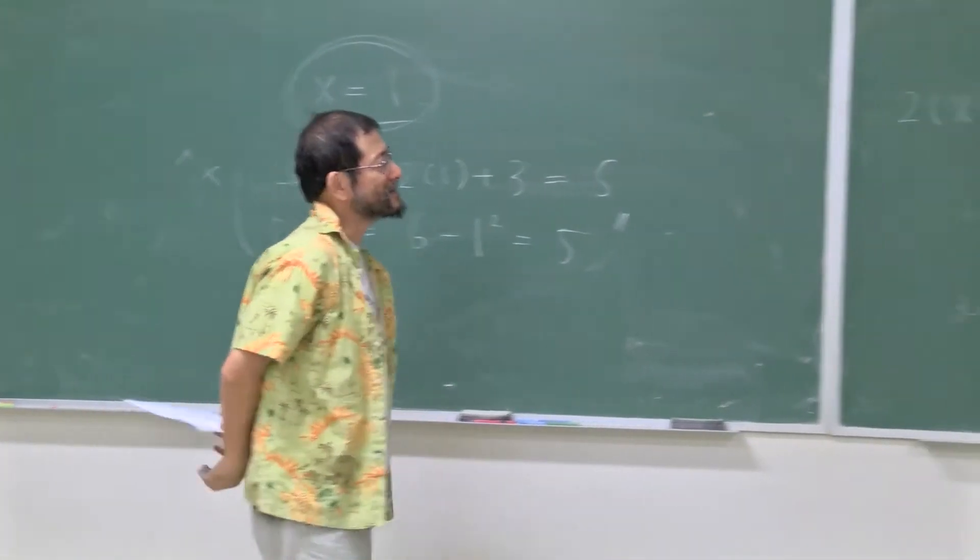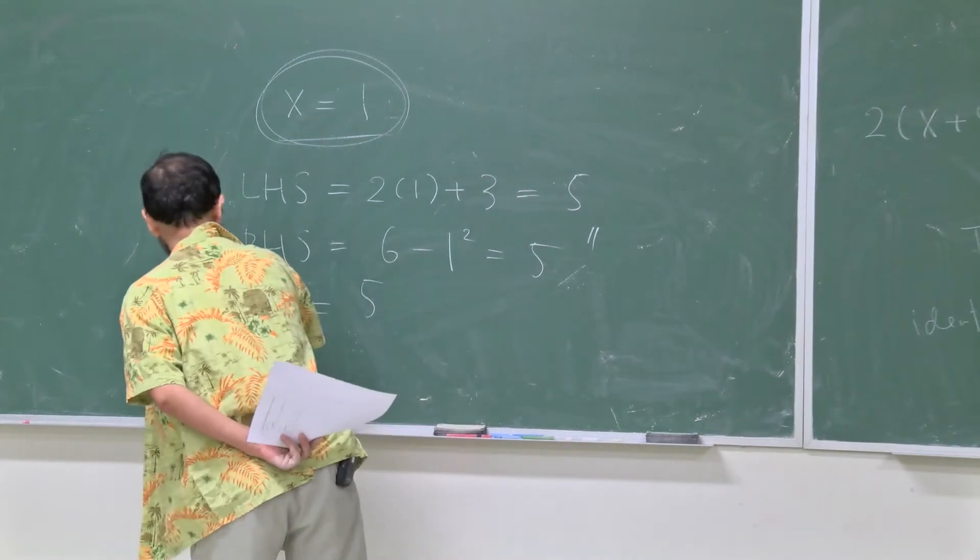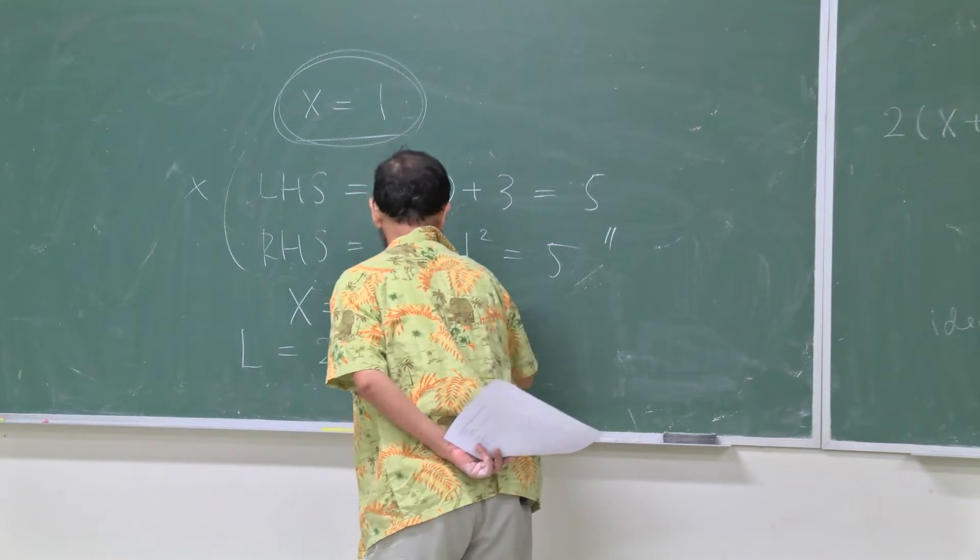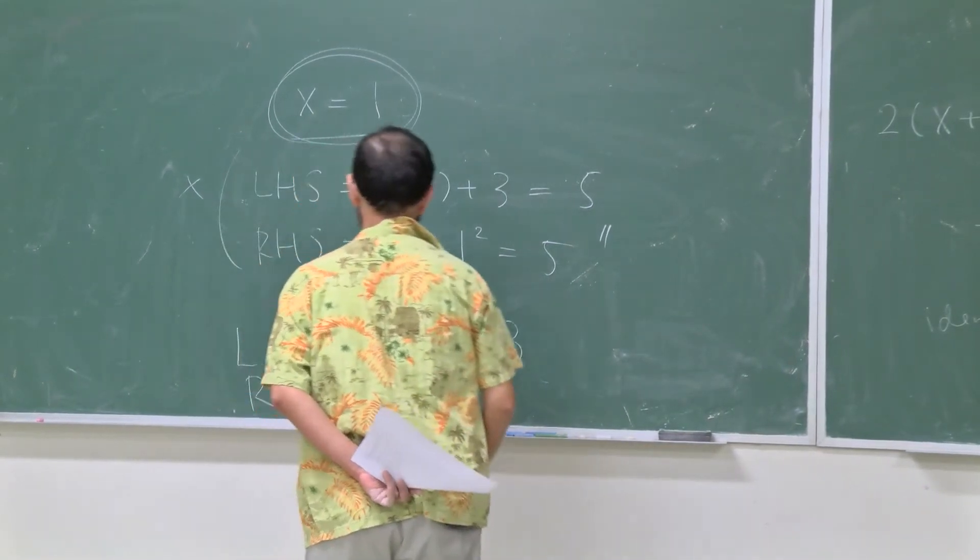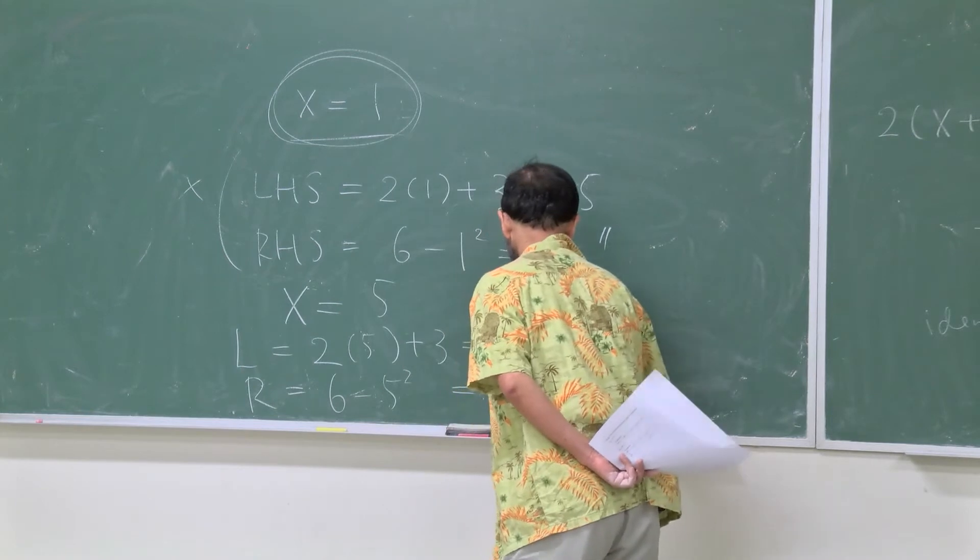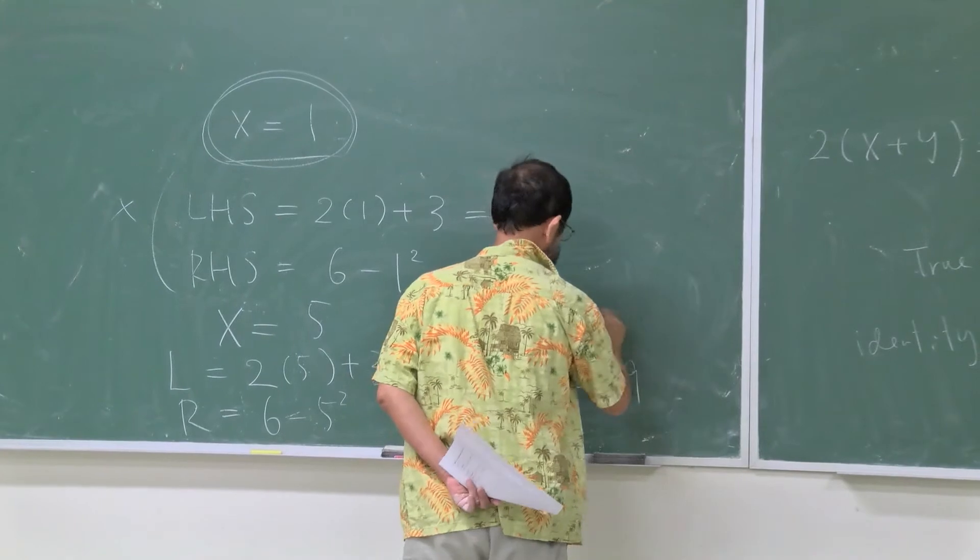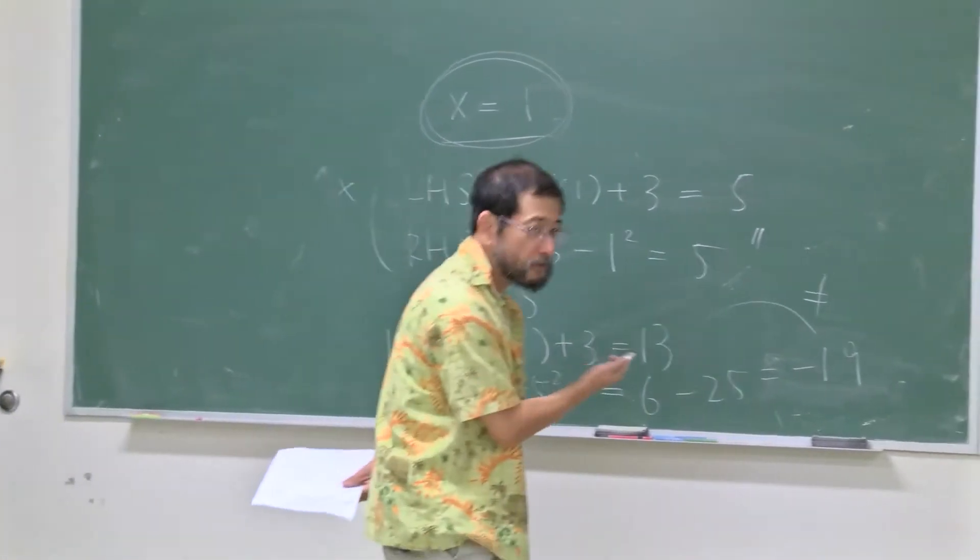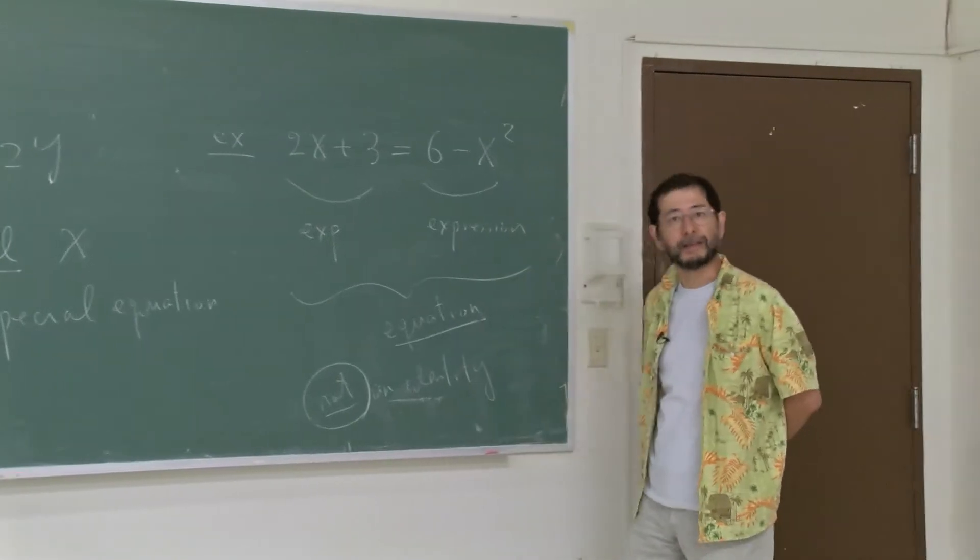So let's try something else. So 5. So x equals to 5. So now, your left hand side, 2 times 5 plus 3, which is 13. You write 6 minus 5 squared, which is 6 minus 25, which is equal to negative 19. So now, we got they are not equal. So that's why we showed that this equation is not an identity.